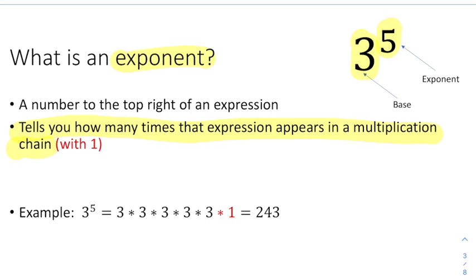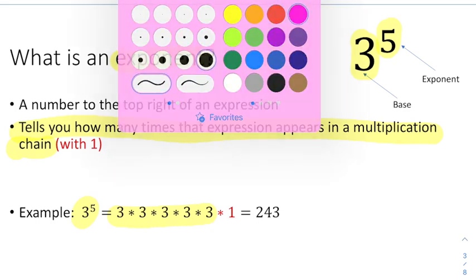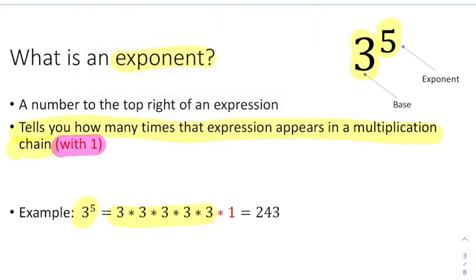So when you see something like 3 to the 5th, it means that there are going to be five 3s being multiplied together. I like to add that the multiplication chain always features a 1 — it's just invisible. You never see the 1 because multiplying by 1 doesn't ever do anything.